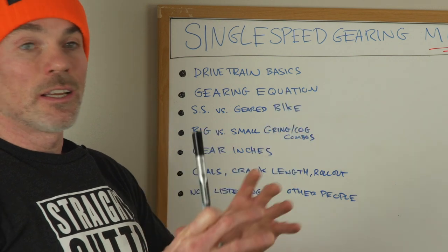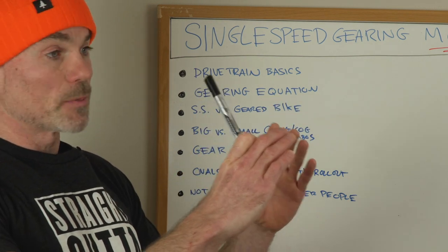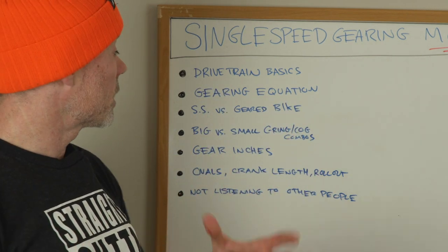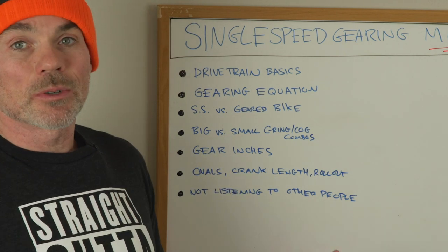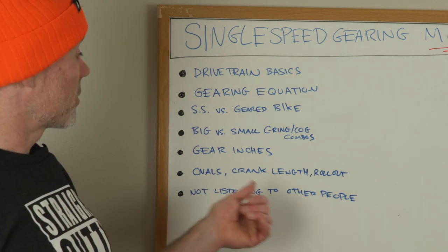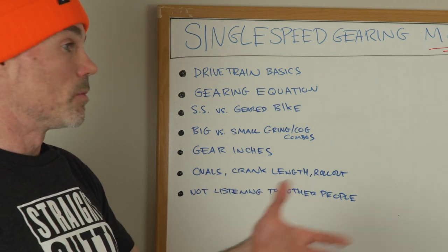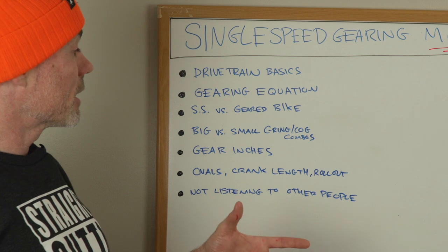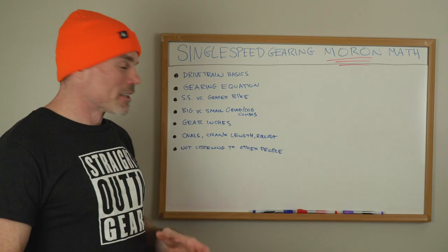Big versus small chain ring cog combos. Do you want to use a big chain ring and a big cog or a smaller chain ring and a smaller cog? We'll get into that. Gear inches, what do we talk about with gear inches? What does that even mean? We're getting to that. Ovals, oval chain rings, crank length, you know 170 versus 185, we're not really going to get into that.